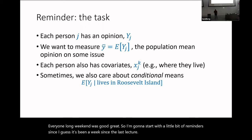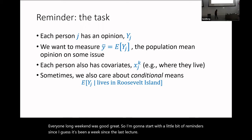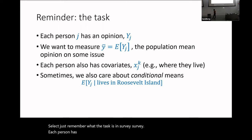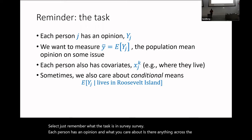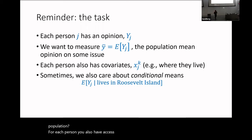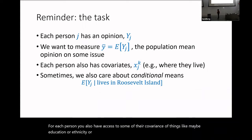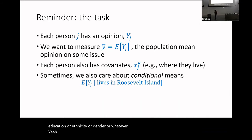Let's remember what the task is in survey opinion collection. Each person has some opinion, and what you care about is the mean opinion across the population. For each person, you also have access to some of their covariates — things like education, ethnicity, or gender. We care about the mean population estimate, and sometimes we also care about the conditional means.